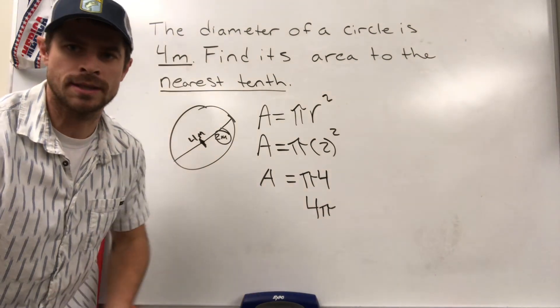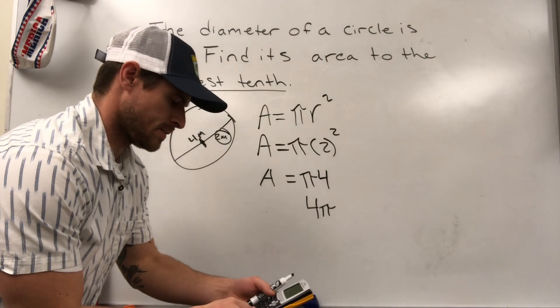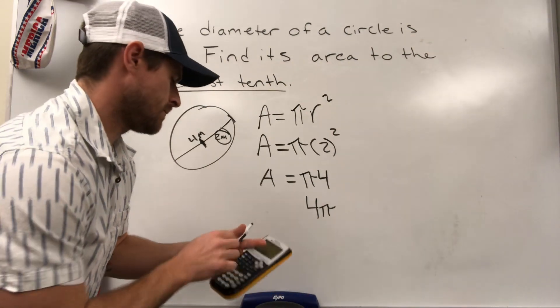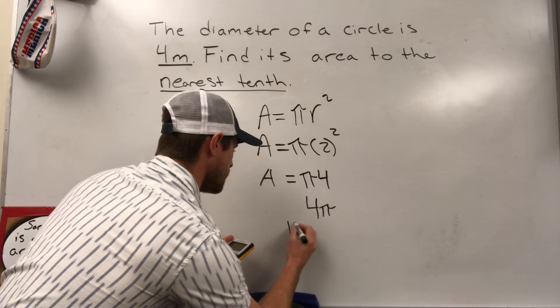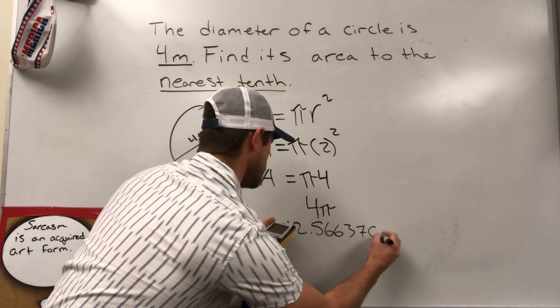Okay. So four times pi. I'm going to multiply those two values together. Four times pi, 12.56, some more values after that. 12.56637061.